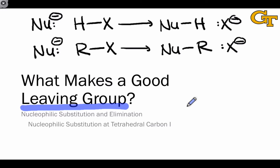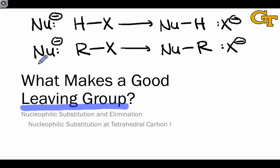I'm actually going to give you a number that allows you to distinguish between good and bad leaving groups. The conceptual foundation of this number is the analogy between a Brønsted acid-base process involving the transfer of a proton, and nucleophilic substitution, which is the Lewis analog involving a Lewis base — the nucleophile — and a Lewis acid — the electrophile.